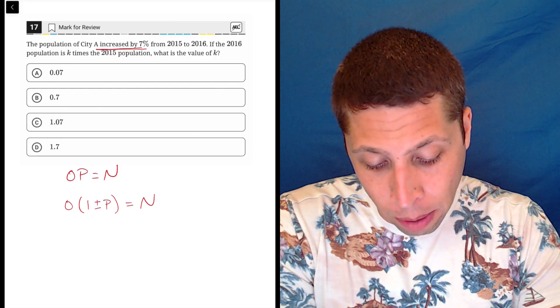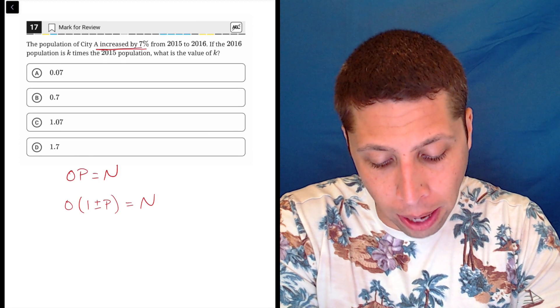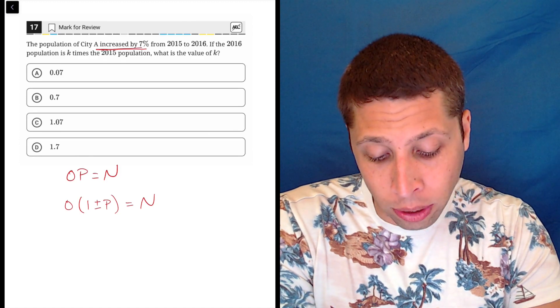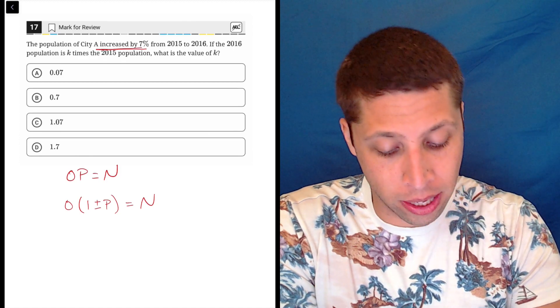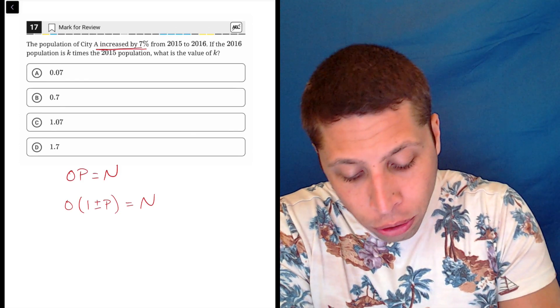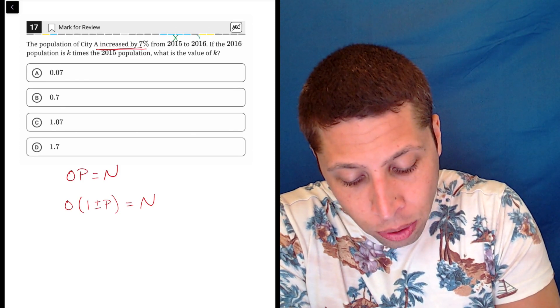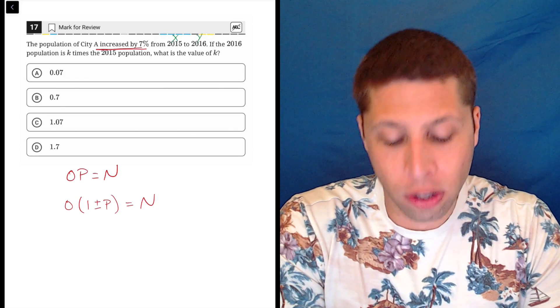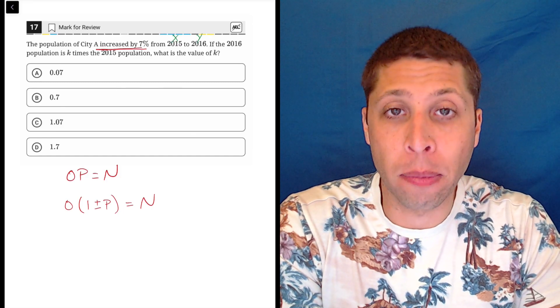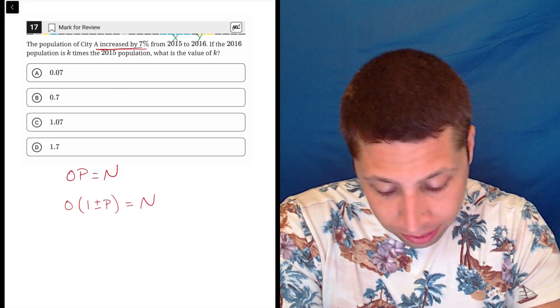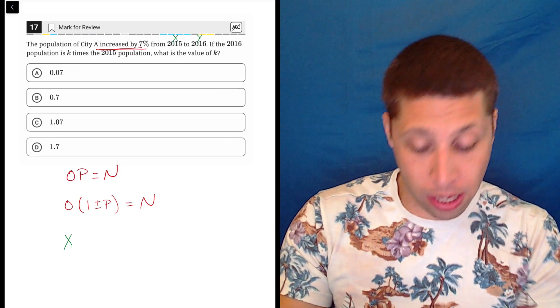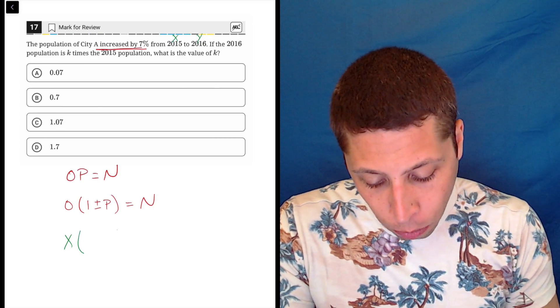So in this case, here's how I'm going to handle this just to really clarify it. We're talking about city A increasing in population from 2015 to 2016. So I'm going to call 2015 X and 2016 Y so that I can kind of separate them and think of them as two separate things. So X then is my original. That's my original value at 2015. So that's going to go in place of the O.